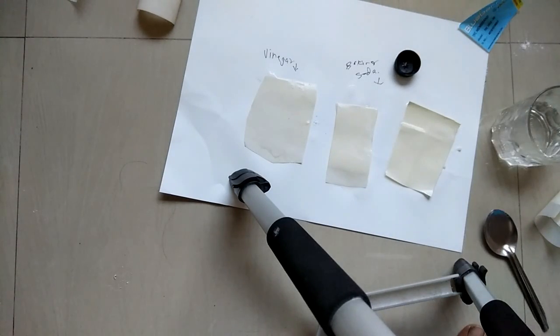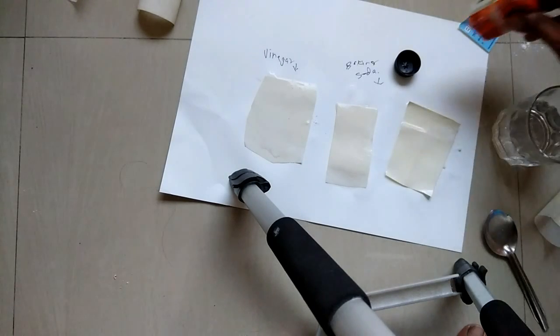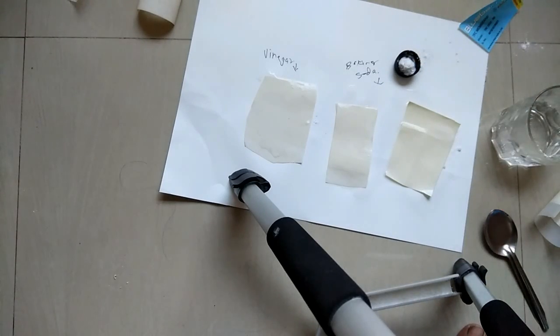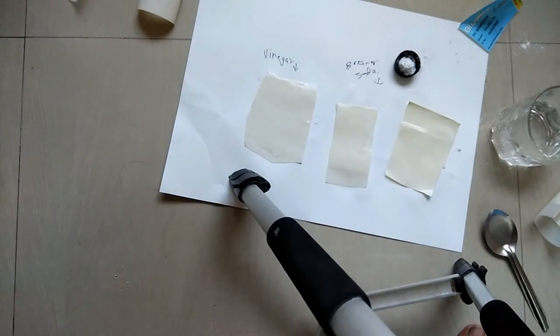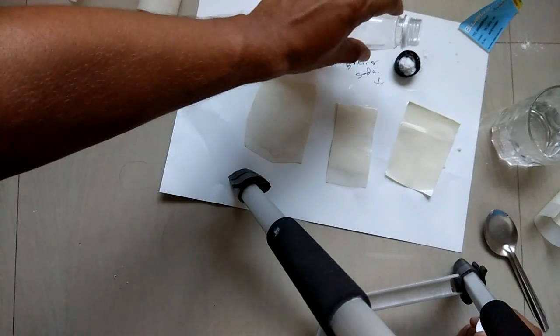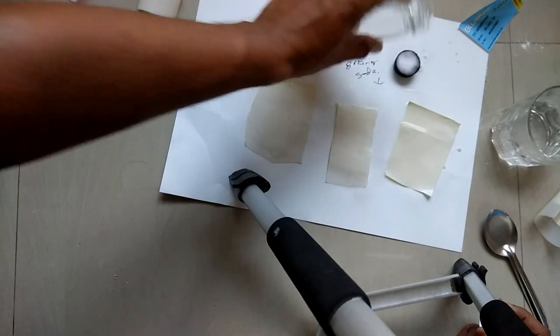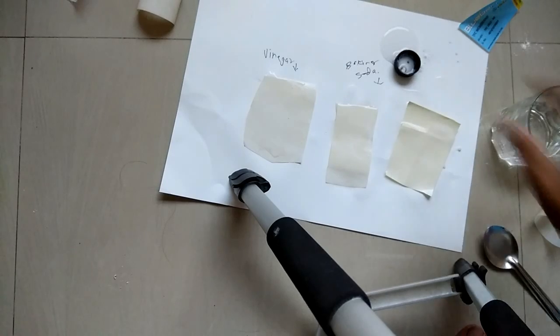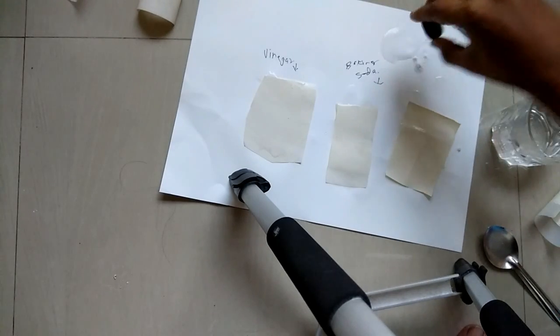So here I have some black cap and I will put some baking soda in it. Then I put some vinegar in it and see what happens. This is called neutralization reaction.